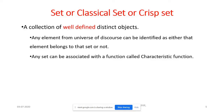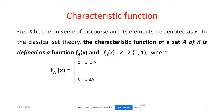A set is a collection of well-defined distinct objects. Any element from the universe of discourse can be identified as either belonging to the set or not. Any set can be associated with a characteristic function. Let X be the universe of discourse. The characteristic function f_A(x) maps from X to {0, 1}, where f_A(x) = 1 if x belongs to A, and 0 if x does not belong to A.